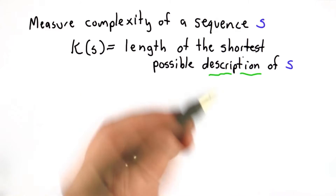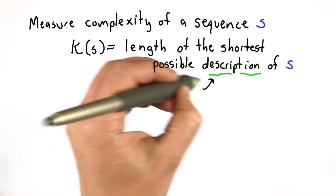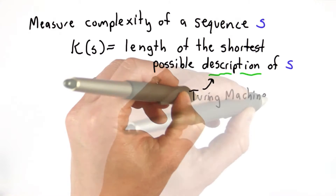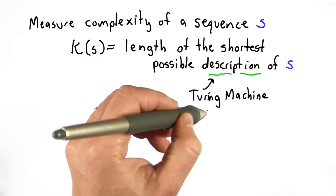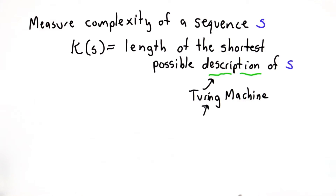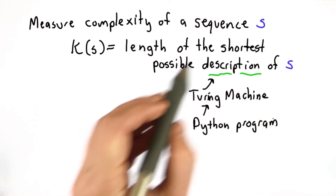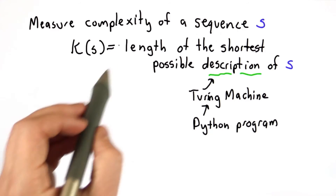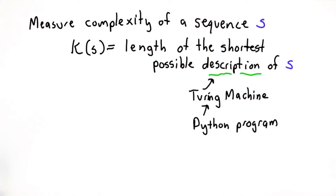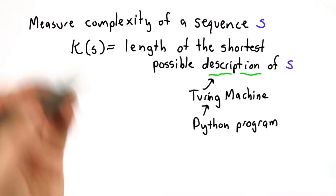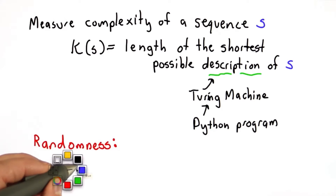For this to be well defined, we need to understand more precisely what a description is. One way to do this would be to say it's a Turing machine, and decide on some formal way for writing down a Turing machine. But we could use any method of describing algorithms that we want — it could be a Python program. Whatever we select as our description language, Kolmogorov complexity is well defined, as long as that description language is powerful enough to describe any algorithm, it's a reasonable way to define complexity.